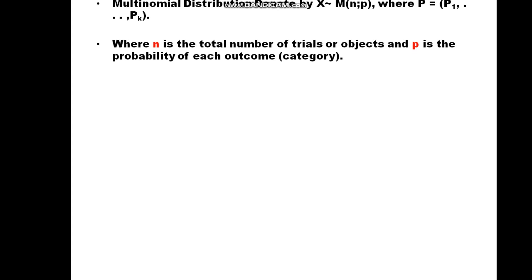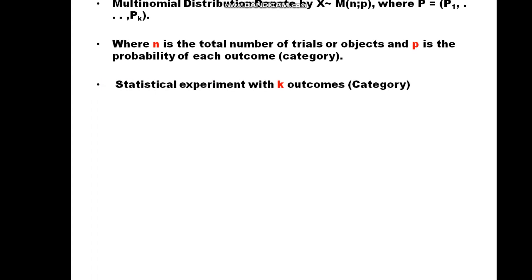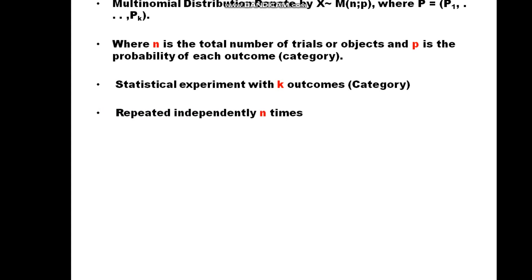In the binomial we have only two outcomes — success or failure — or two categories. But here in the multinomial we have many, or more than two categories. It is a statistical experiment with K outcomes or K categories. The number of categories in multinomial is equal to K, but in the binomial it is equal to two: success or failure. The repeated independent trials is N times.